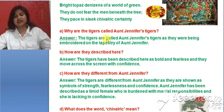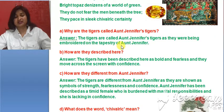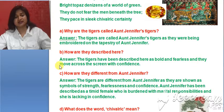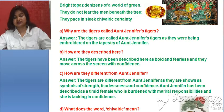Question: Why are the tigers called Aunt Jennifer's tigers? The tigers are called Aunt Jennifer's tigers because they were embroidered on the tapestry by Aunt Jennifer. How are they described? The tigers are described as bold and fearless; they move across the screen with confidence and do not fear the man standing under the tree.